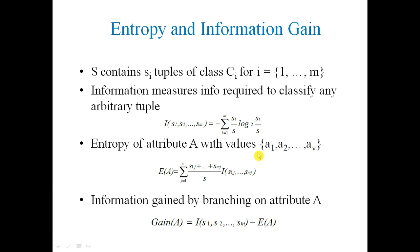The entropy value for attribute A with values a1, a2, up to av is equal to the summation j=1 to v of (S1j + S2j + ... + SMj) divided by S, multiplied by I(S1j, S2j, ..., SMj). The final equation for information gain is: Info Gain = I(S1, S2, ..., SM) minus Entropy of A.